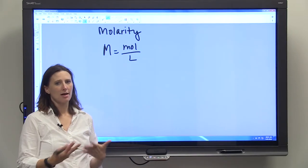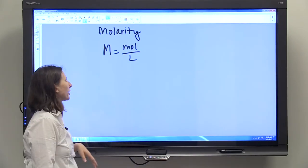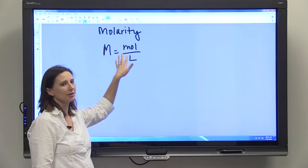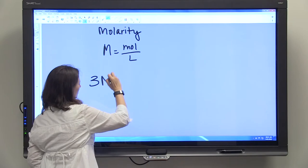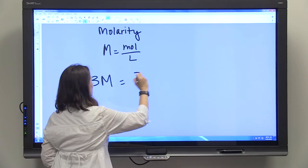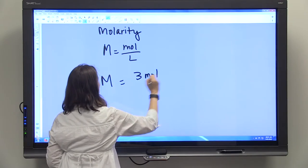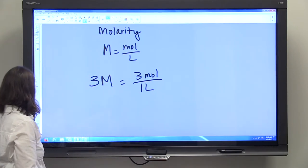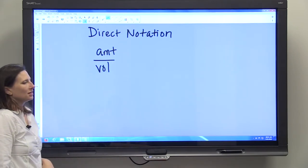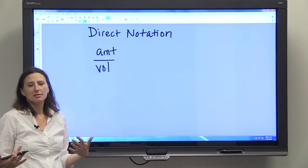Molarity we've talked a lot about, but this is just a quick refresher. It's moles per liter, so if you're given a solution concentration of 3 molar, that's 3 moles in 1 liter.